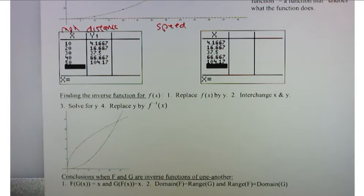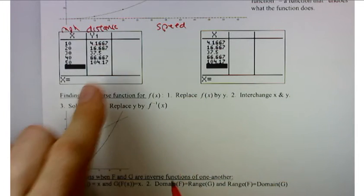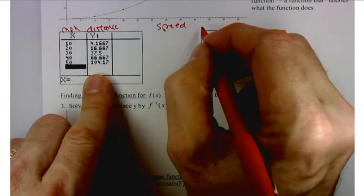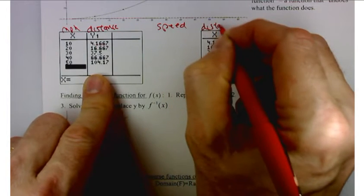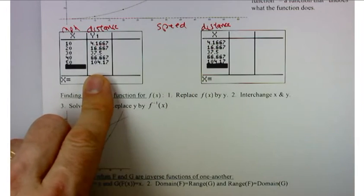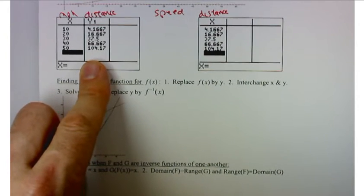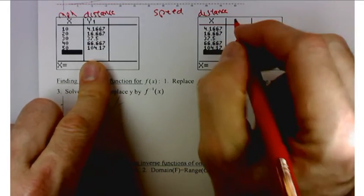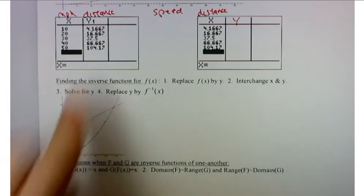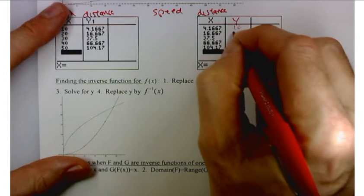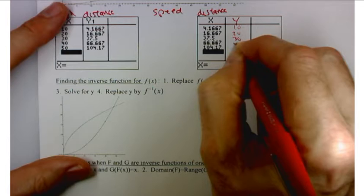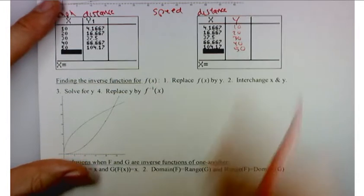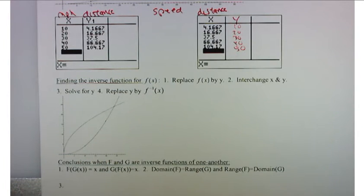Instead of dealing with the function, I need to deal with something called the inverse function. The inverse function is going to interchange those roles. So my input, I'd like it to be the distance of the skid. What do you suppose I'm going to get for my output, though? What do I want here for the y column? The miles per hour. So 10, 20, 30, 40, 50. So I need to interchange those roles.